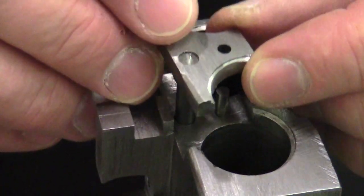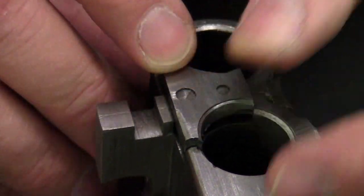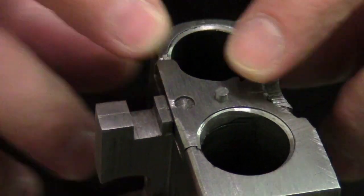Rough filing the extractor's radius is complete when the chamber reamer will begin to fit down the barrels while the extractor is in place.